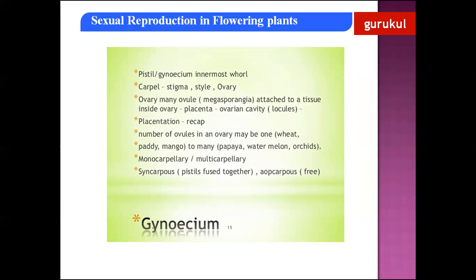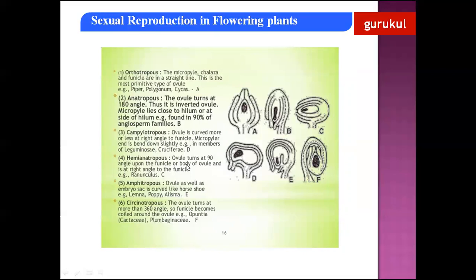Placentation is the arrangement of ovules inside the ovary. The number of ovules can be one — example wheat, paddy, mango — or many — example papaya, watermelon, orchids. A gynoecium with one carpel is called monocarpellary; with many carpels, multicarpellary. When carpels are fused it is called syncarpous, whereas when carpels are free it is called apocarpous.